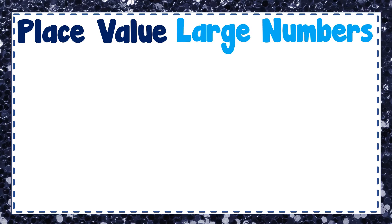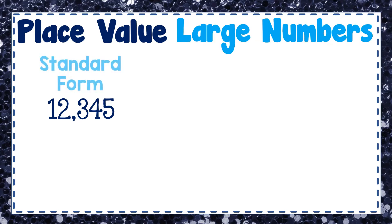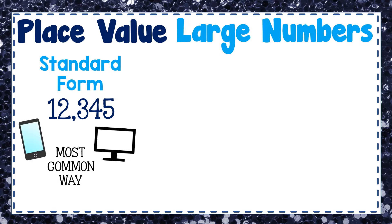Let's get into talking about place value. Here's the number 12,345. When I represent this number in this way, I have represented it in standard form. That's the way you see numbers most commonly — on your cell phone, computer screen, television, or the cash register at the gas station. This is how you normally see numbers.